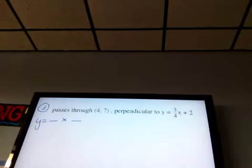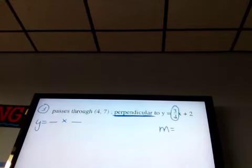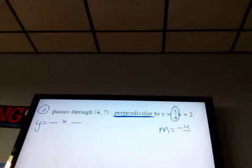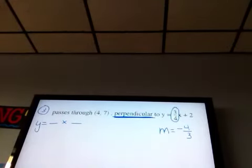But my line is perpendicular to it. So the slope of the line I'm looking for is not 3/4, it is negative 4/3. So you flip it and you change the sign. And then we're going to go fill that in.